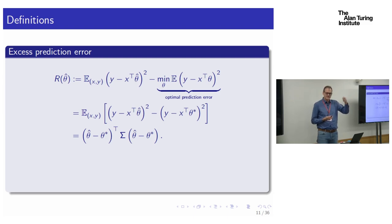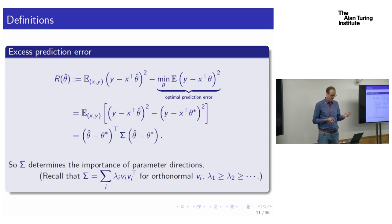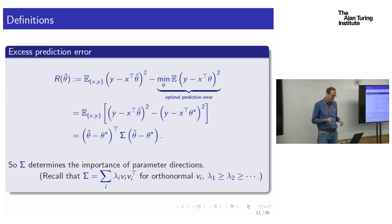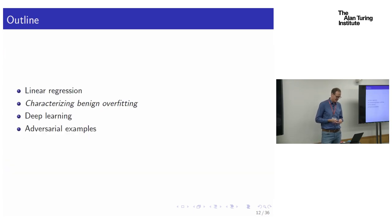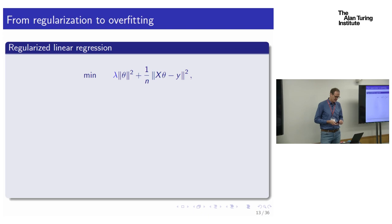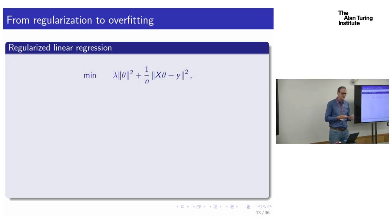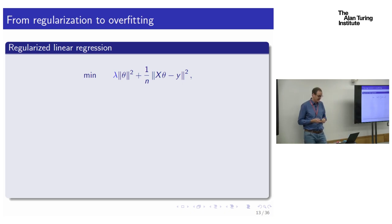Here's the main result. One comment before the theorem: we've been seeing regularized empirical risk optimization problems. There's an empirical risk term and a complexity term — in our case, the squared Euclidean norm of the parameter vector. We can think of that as the Lagrangian of a constrained optimization minimizing complexity subject to a constraint on fit to the data.